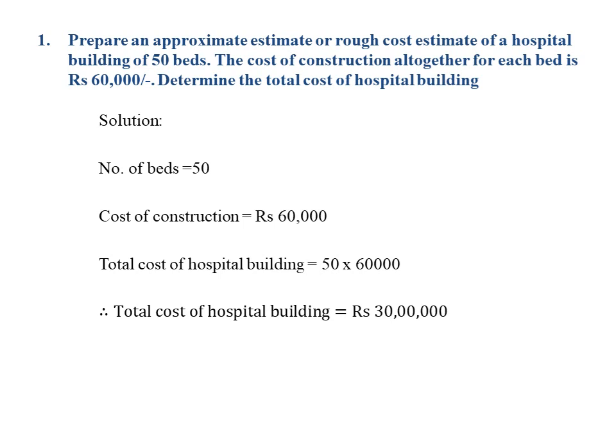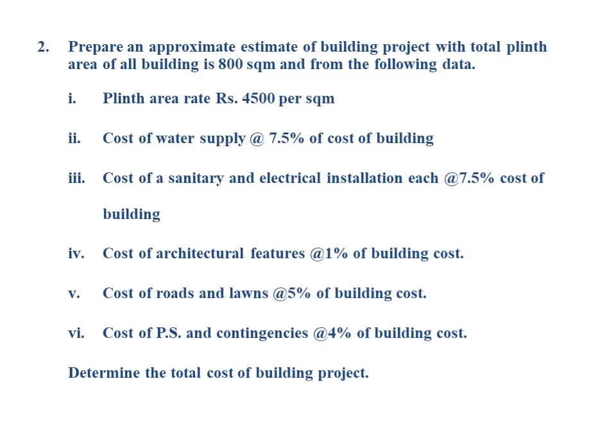Numerical number two: Prepare an approximate estimate of a building project where the total plinth area of all buildings is 800 square meter. Data given: plinth area rate rupees 4,500 per square meter; cost of water supply at 7.5% of cost of building; cost of sanitary and electrical installation each at 7.5% of cost of building; cost of architectural features at 1% of building cost; cost of roads and lawns at 5% of building cost; cost of PS and contingencies at 4% of building cost.